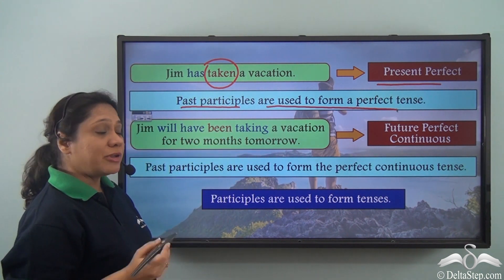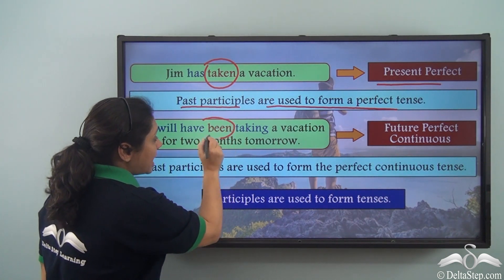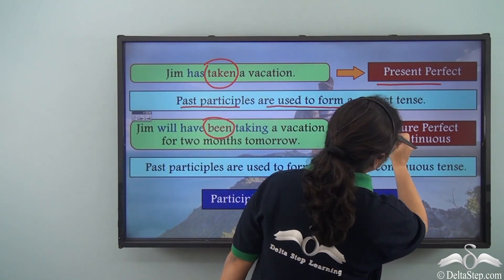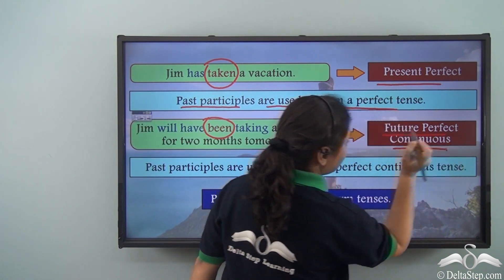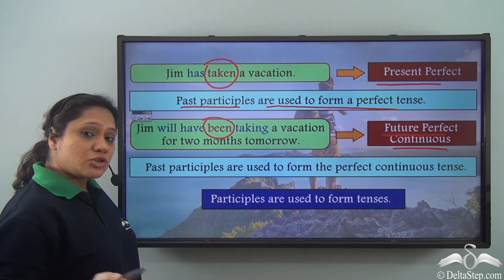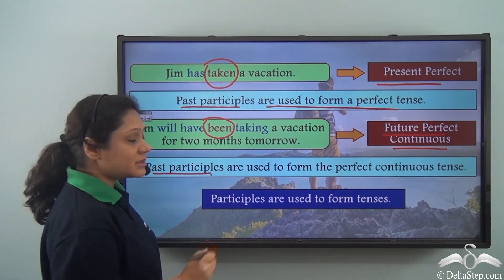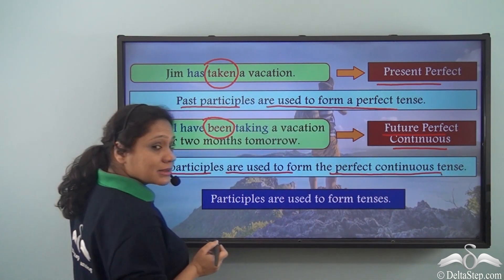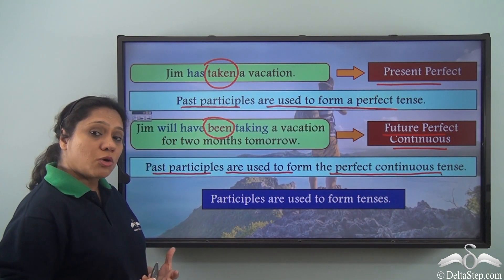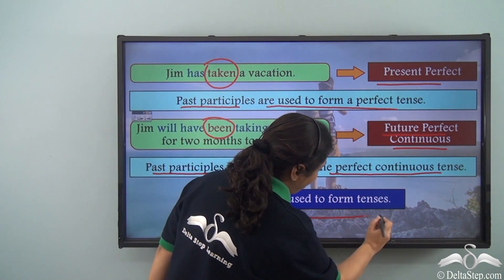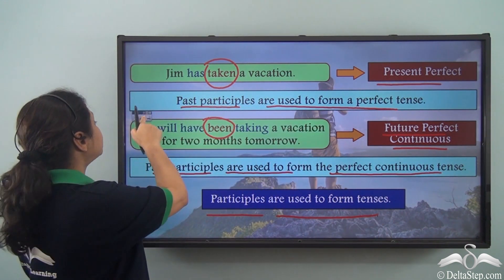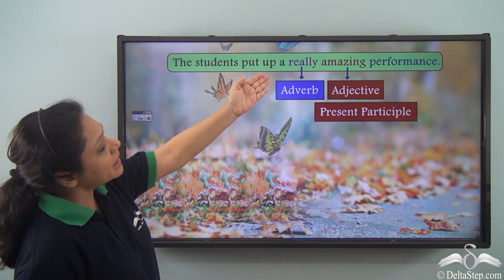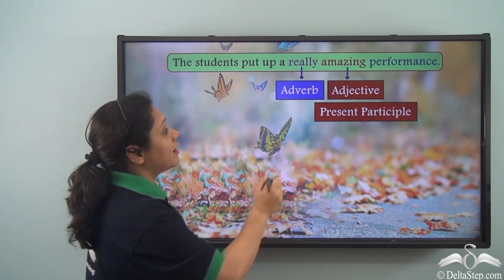Now in this sentence, 'Jim will have been taking a vacation for two months tomorrow,' we have used the past participle of the be-verb as 'being,' and the sentence portrays the future perfect continuous tense. So we can say that past participles are used to form the perfect continuous tense. So we know that participles are used to form tenses.